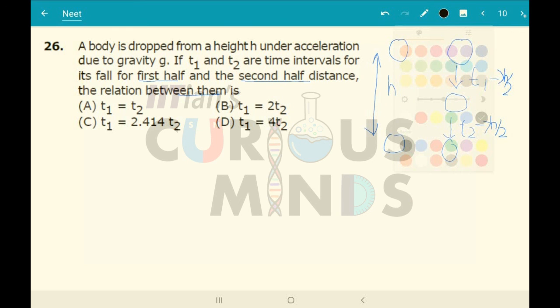Let us consider the time required to travel the first half of the distance. Using s = ut + ½at², since it is just dropped, initial velocity will be 0. So for the first case, h/2 will be equal to initial velocity 0, which equals ½at₁². Let it be as it is.